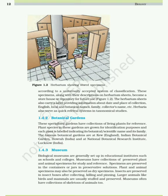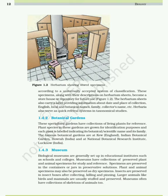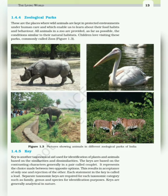Biological museums are generally set up in educational institutes such as schools and colleges. Museums have collections of preserved plant and animal specimens for study and reference — specimens are preserved in containers or jars in preservative solutions. Plant and animal specimens may also be preserved as dry specimens. Insects are preserved in insect boxes after collecting, killing and pinning. Larger animals like birds and mammals are usually stuffed and preserved, and museums often have collections of skeletons of animals too. Zoological parks are places where wild animals are kept in protected environments under human care, enabling us to learn about their food habits and behavior. All animals in a zoo are provided, as far as possible, conditions similar to their natural habitats.